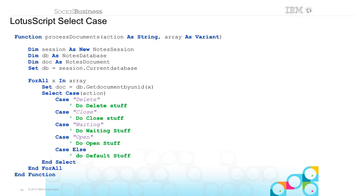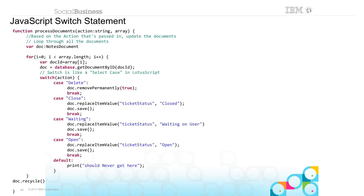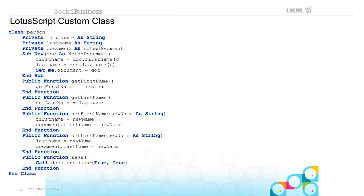Here's a LotusScript select case — case delete, case close, case waiting, case else. And here is the JavaScript equivalent, which they call switch. The key difference is at the end of each case block you need to have a break, otherwise it will fall through to other cases. And the case-else equivalent is called 'default' at the bottom. If you're doing a lot with LotusScript, it behooves you to start converting that code and thinking into server-side JavaScript and not rely on @functions or LotusScript as much. Custom class in LotusScript is basically wrapping functions inside a class statement with internal methods.